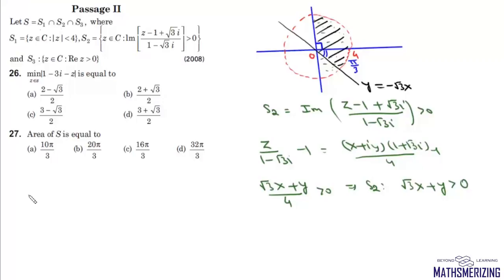Now the first question is: we need to find the minimum value of |1 - 3i - z|, which we can also write as |z - (1 - 3i)|. Now this is nothing but the distance between z and this point which is 1 - 3i. Now 1 - 3i will lie somewhere here.